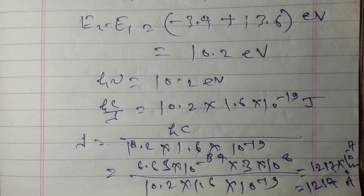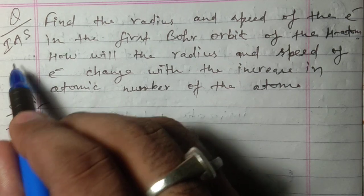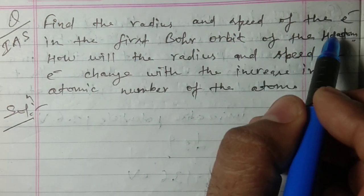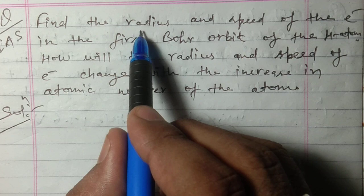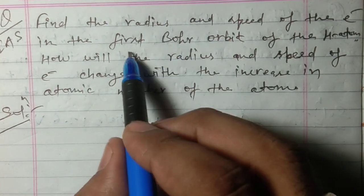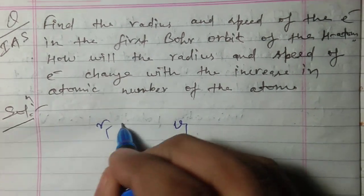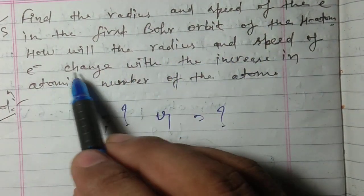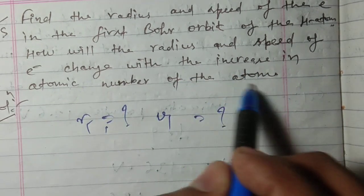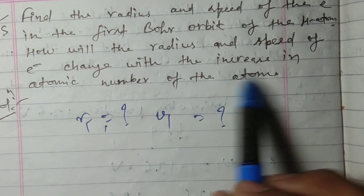This is a very simple question which was asked in IS exam. The next question, also asked in IS exam, is: find the radius and speed of the electron in the first Bohr orbit of the hydrogen atom. We have to find radius r1 and speed v1, and then how the radius and speed of the electron change with the increase in atomic number.